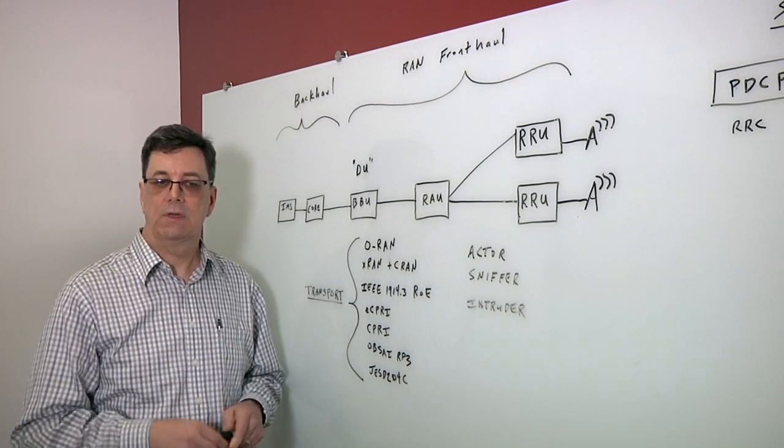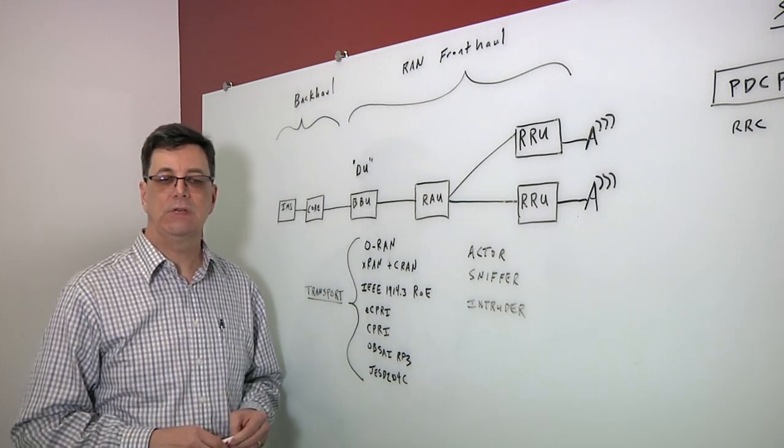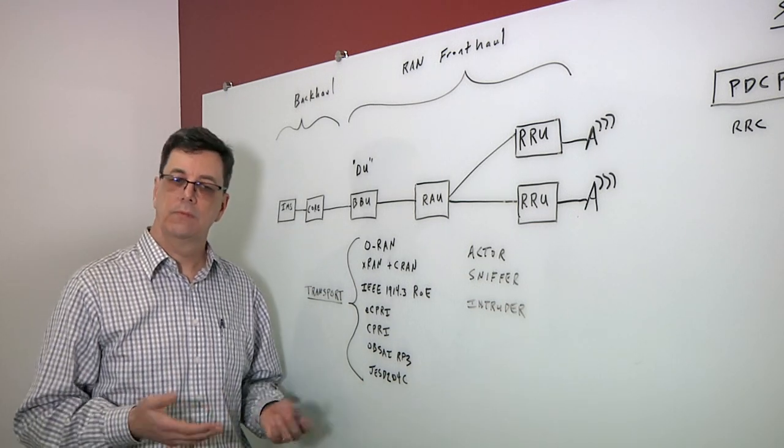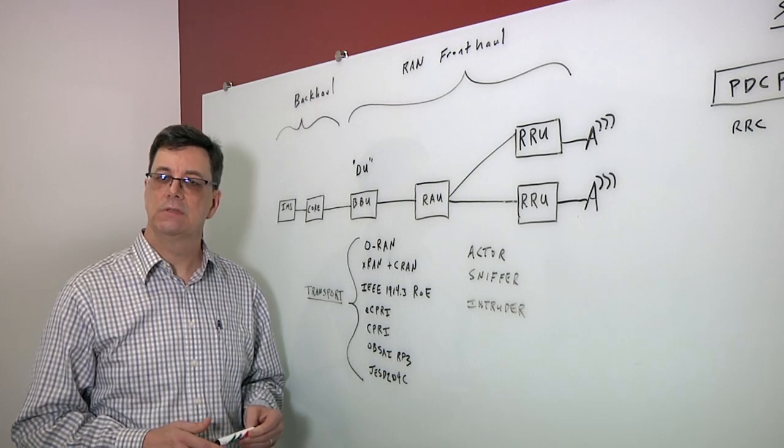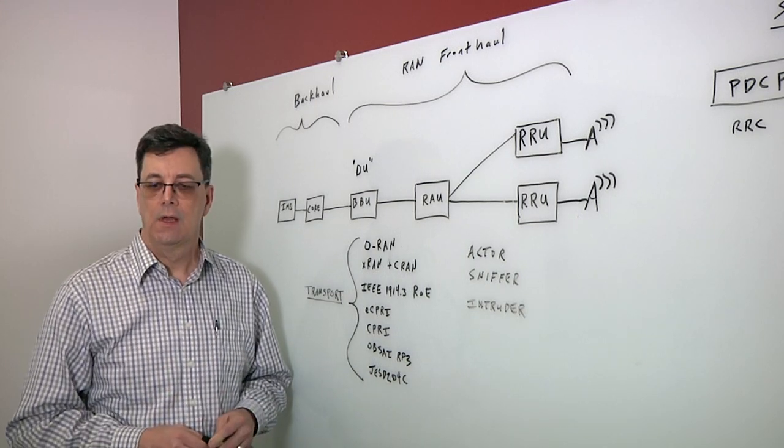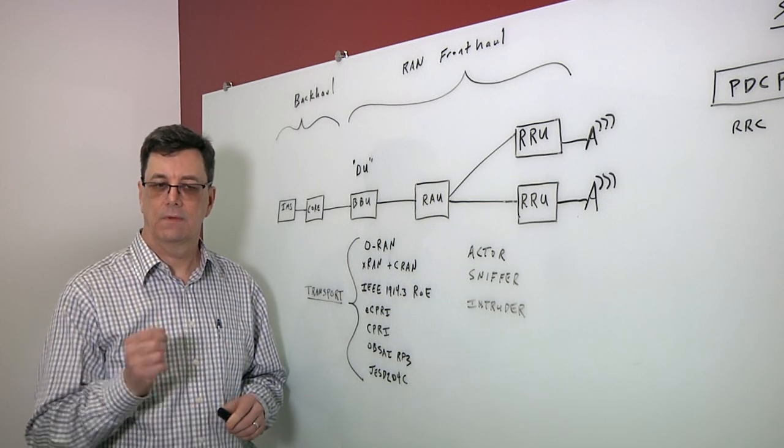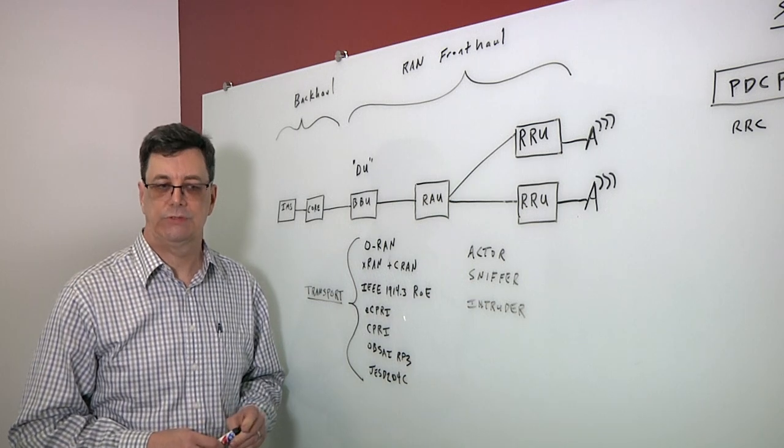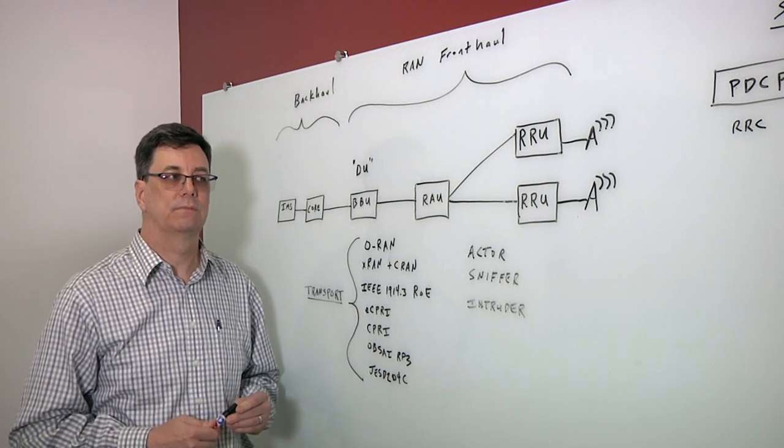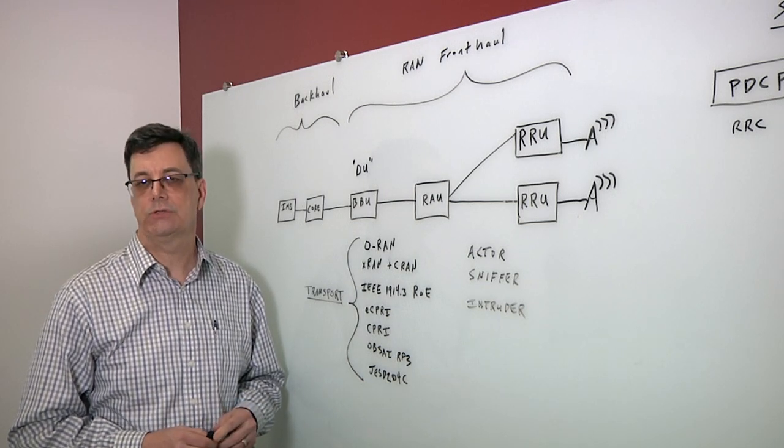But what's new with sub-6 is obviously re-farming some of the spectrum to be 5G to support both 5G-assisted and then eventually 5G-unassisted networks. But Massive MIMO and Millimeter Wave provide a completely new twist on how 5G deployments and developments will progress in the future.